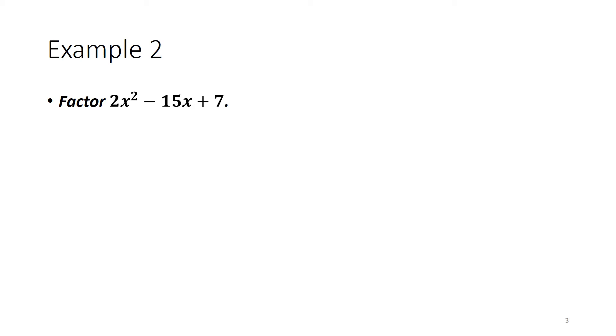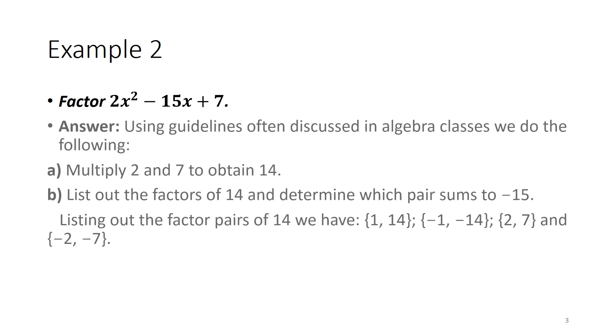Our next example asks us to factor 2x squared minus 15x plus 7. Using guidelines often discussed in algebra classes, we do the following: Multiply 2 and 7 to obtain 14, list out the factors of 14, and determine which pair sums to negative 15.